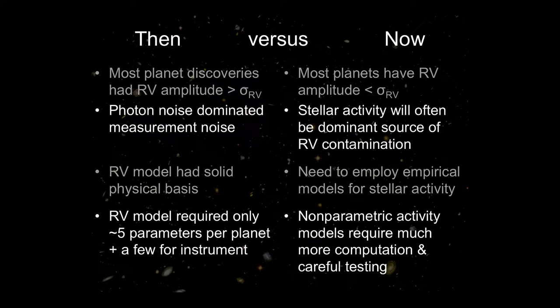Comparing the early days of exoplanet discovery — when planets had amplitudes much larger than measurement uncertainties — to where we are now, the most interesting planets have amplitudes less than the uncertainty of a single measurement. Before, we worried primarily about photon noise as the dominant noise source. But now the new generation of instruments will basically always be limited not by photons but by the stellar variability itself. As a result, we need to change the way we do the analysis — we now have more of an empirical model for stellar activity and have to figure out how to do inference with a model we know is wrong.